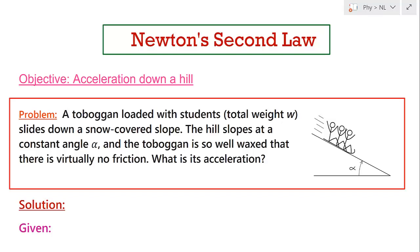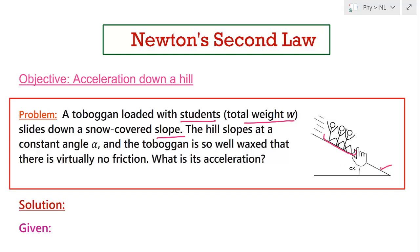Let us discuss this problem. A toboggan loaded with a student — total weight W — slides down a snow-covered slope. This is a snow-covered slope and this is the toboggan filled with the student. The toboggan is sliding down this incline. Since this is a snow-covered slope, we can assume the friction on this surface is very small.